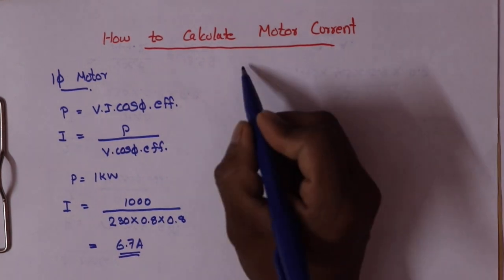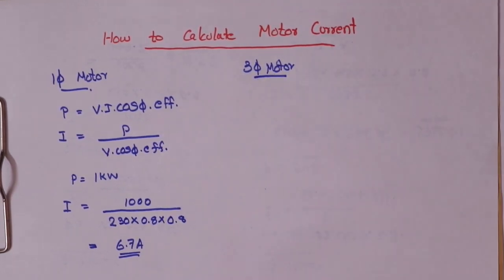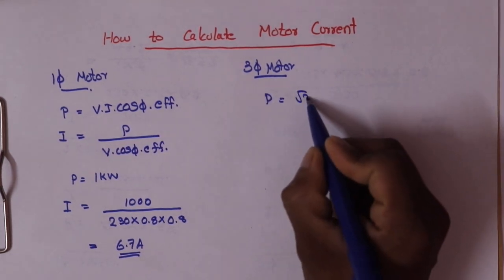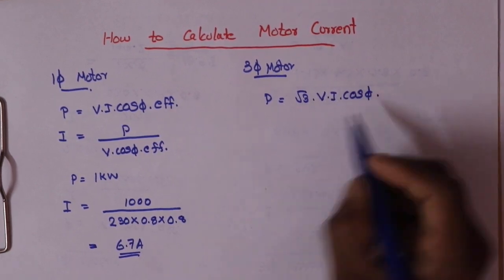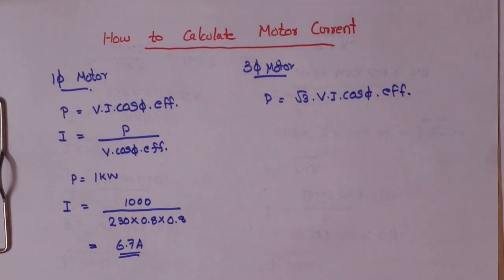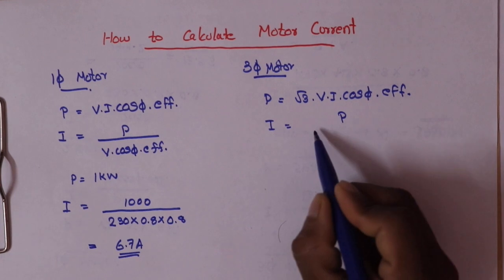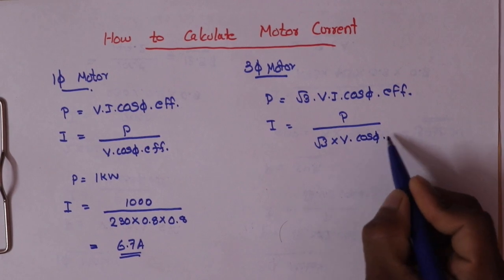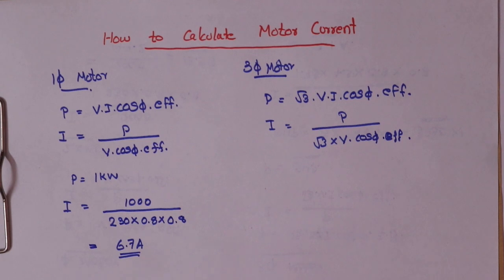Now let's look at the three-phase motor. The power formula for three-phase is: P is equal to root 3 times V times I times cosφ. Including efficiency, the current equation becomes: I is equal to P divided by root 3 into V into cosφ into efficiency.